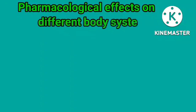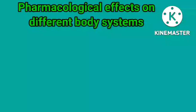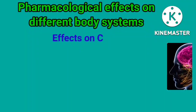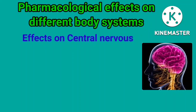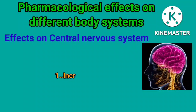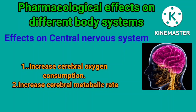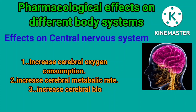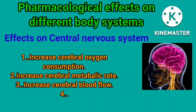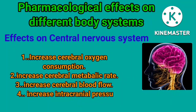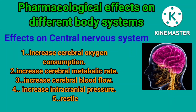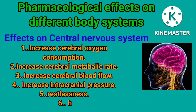Pharmacological effects on different body systems. Effects on the central nervous system: increases cerebral oxygen consumption, increases cerebral metabolic rate, increases cerebral blood flow, increases intracranial pressure, causes restlessness and hallucinations.